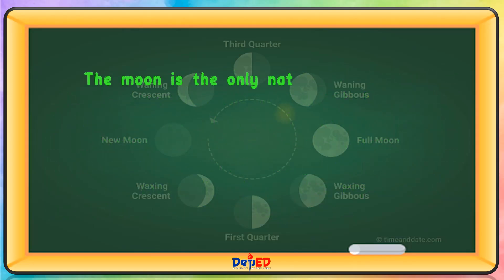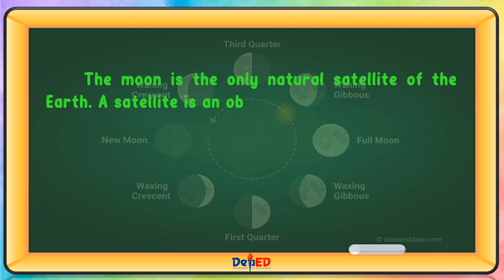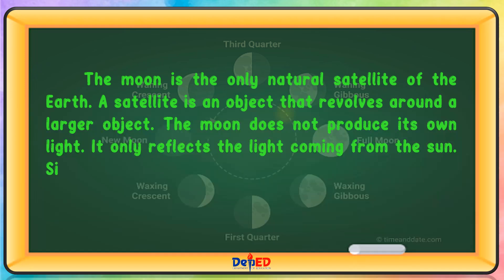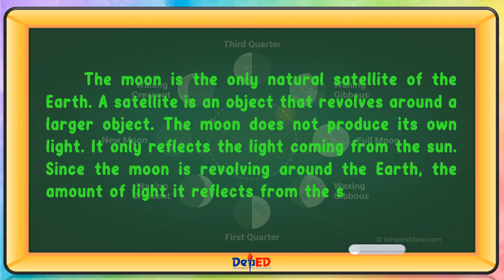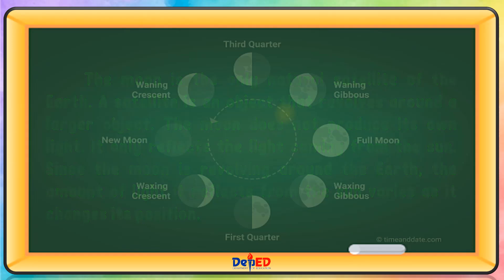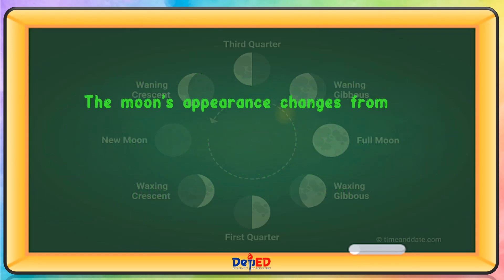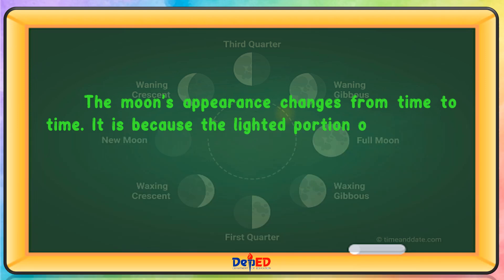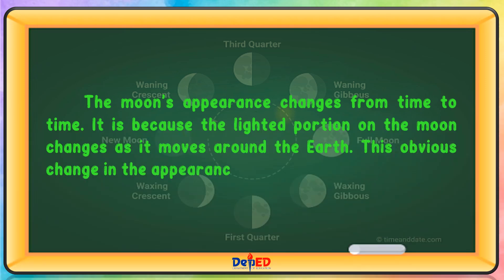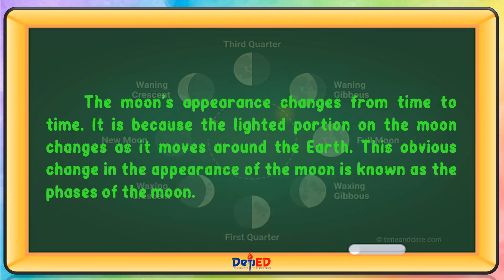The Moon is the only natural satellite of the Earth. A satellite is an object that revolves around a larger object. The Moon does not produce its own light — it only reflects the light coming from the Sun. Since the Moon is revolving around the Earth, the amount of light it reflects from the Sun varies as it changes its position. This obvious change in the appearance of the Moon is known as the Phases of the Moon.